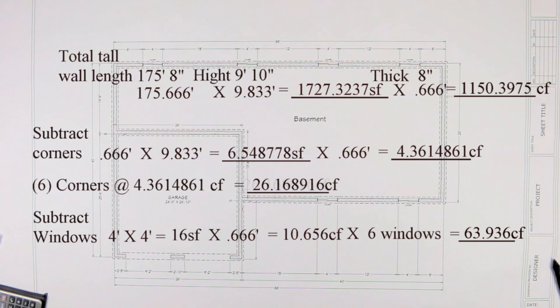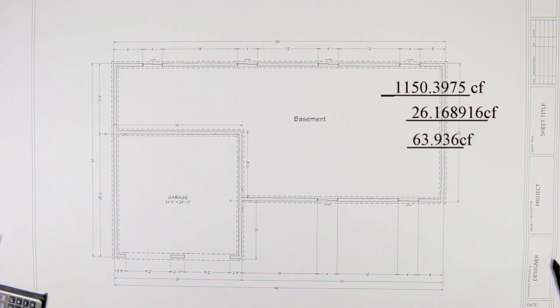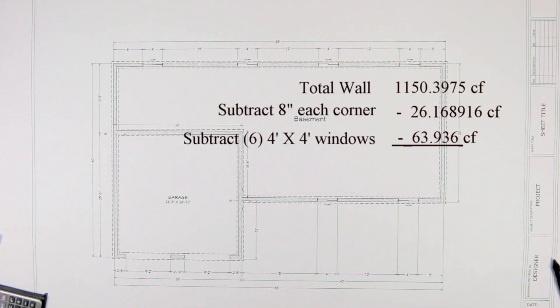So what we have is 1,150.3975 cubic feet minus 26.168916 cubic feet and minus 63.936 cubic feet gives us a grand total of 1,060.2926 cubic feet.